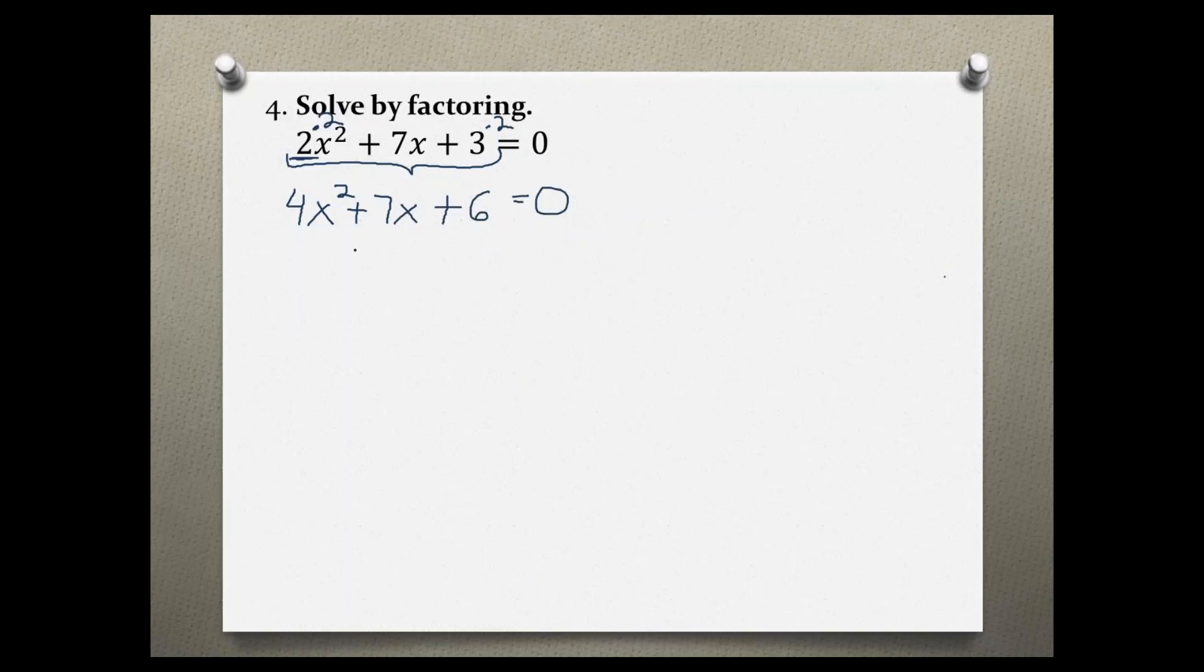Now I can use the same steps as I used before. I'm going to write my empty sets of parentheses and then I'm going to square root my first term. So the square root of 4x² is 2x, and I'm going to write that twice.